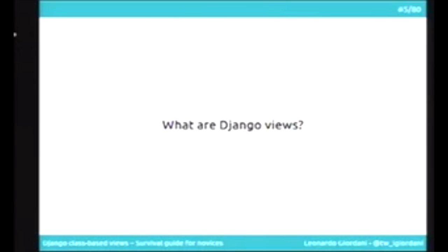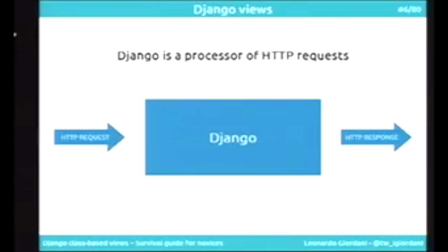I think the best way to understand class-based views is to start with plain Django views. What are Django views? For the scope of this talk, I think Django is just a processor of HTTP requests. You know that Django is a very rich framework, full of things. But for me, today, it's just a processor of requests. Requests come from another server or a browser, and they are transformed into a response.